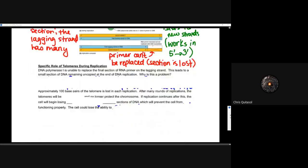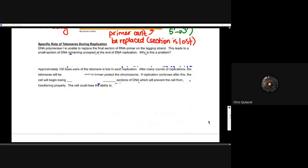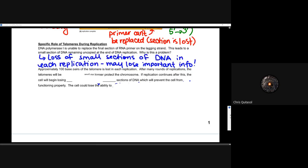So let's talk about those specific roles because a couple of questions came up that are asking about specific roles of telomeres during replication. So DNA polymerase one is unable to replace that final section of RNA primer on that lagging strand, like I alluded to. This leads to a small section of DNA remaining uncopied at the end of DNA replication. Why would this be a problem? Well, holy smokes, if we're losing small sections of DNA in each replication, there might be some important information on there. Imagine the end of one chromosome on the lagging strand is responsible for coating a protein that breaks down glucose, for example, that would be a huge issue to not have that information get passed on into that daughter cell.